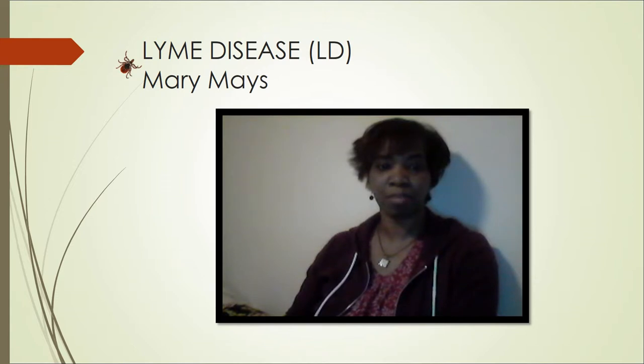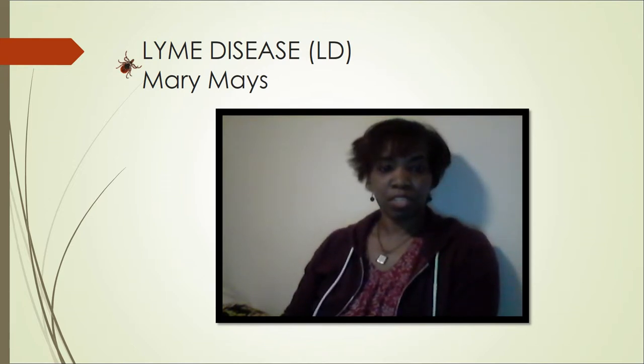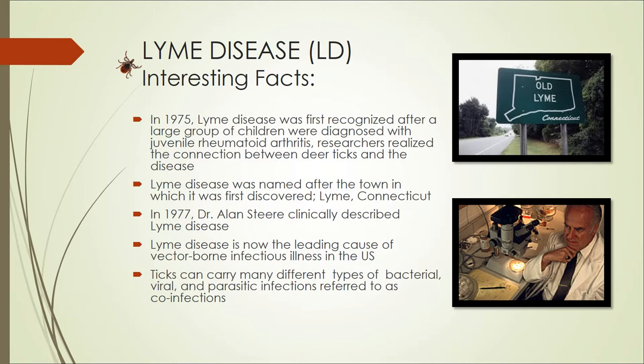Hi, my name is Mary Mays, and I'm here to share 17 interesting facts about Lyme disease. In 1975, Lyme disease was first recognized after a large group of children were diagnosed with juvenile rheumatoid arthritis, and researchers realized the connection between deer ticks and the disease. Lyme disease was named after the town in which it was discovered: Lyme, Connecticut. In 1977, Dr. Alan Stern clinically described Lyme disease. Lyme disease is now the leading cause of vector-borne infectious illness in the United States.